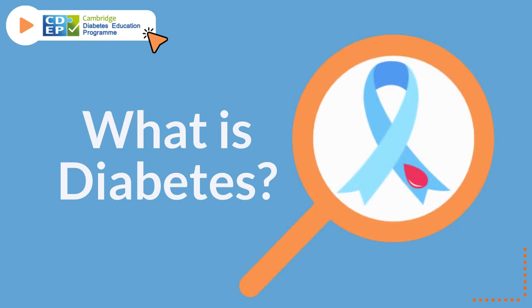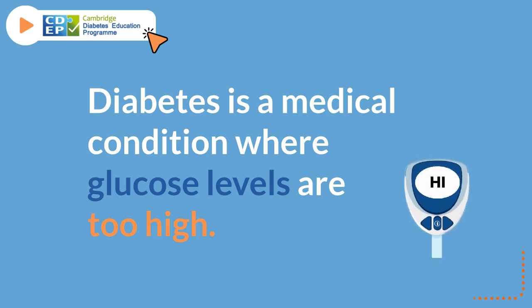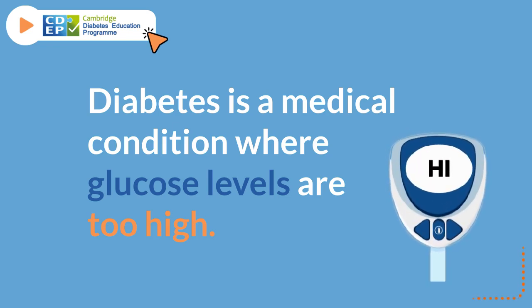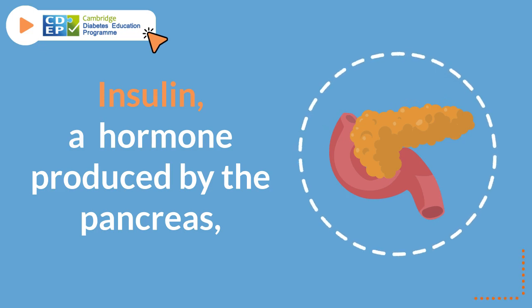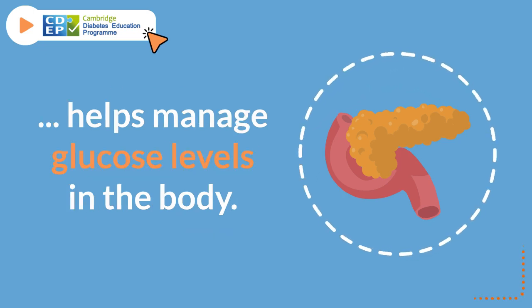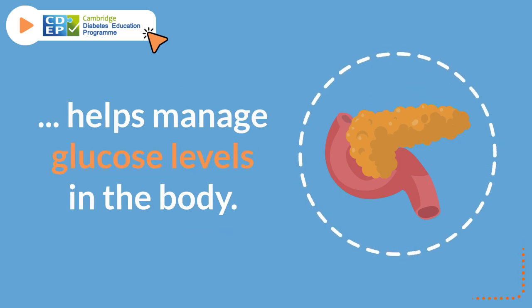What is diabetes? Diabetes is a medical condition where glucose levels are too high. Insulin, a hormone produced by the pancreas, helps manage glucose levels in the body.